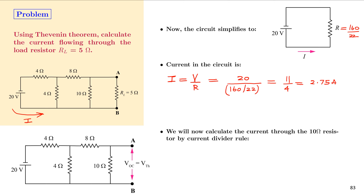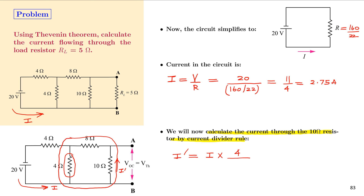With the load resistor RL removed, the total current in the circuit is 2.75 amperes. We can now calculate the current through the 10 ohm resistor using the current divider rule. The current through the 10 ohm resistor, I', equals the total current multiplied by the resistance in the other branch (4 ohm) divided by the total resistance (4 + 8 + 10 = 22), giving 2.75 × 4/22 = 0.5 amperes.